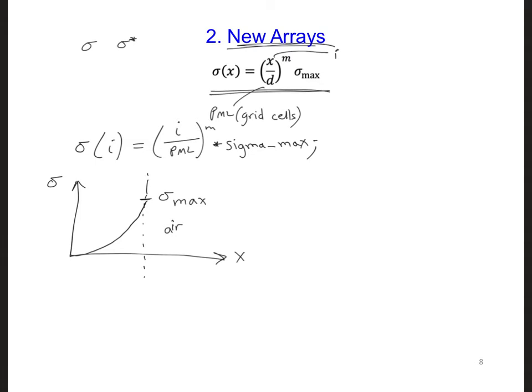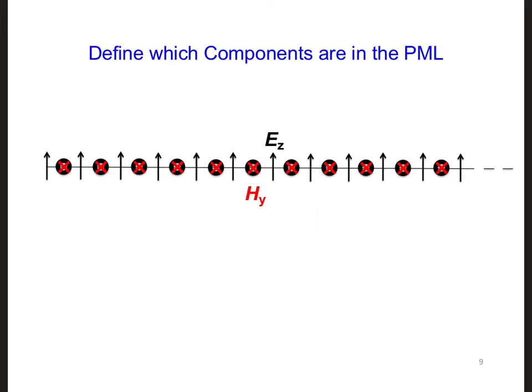No, we need to have actually the reverse of this. We need the conductivity to increase slowly from the air region over here to sigma max at the left edge. And now we don't have an abrupt change in sigma at the air absorbing boundary interface. So how can we change this in our expression?